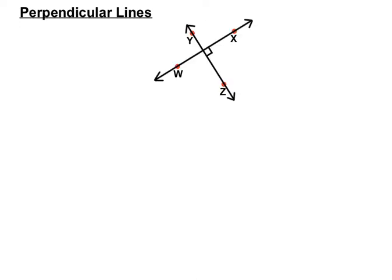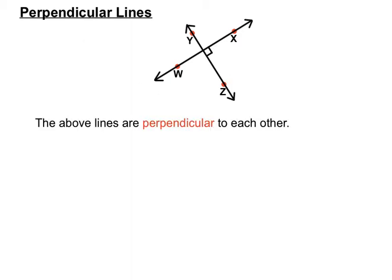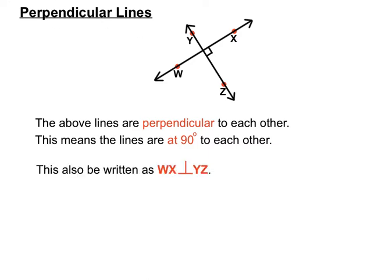We've also got perpendicular lines. Perpendicular lines are indicated by a 90-degree angle created at their intersection. The above lines are perpendicular to each other, meaning the lines are at 90 degrees to each other, as indicated by the right angle symbol. You can also write it using a special symbol for 'is perpendicular to' — it has a vertical bit and a flat bit at the bottom — so that line WX is perpendicular to line YZ.